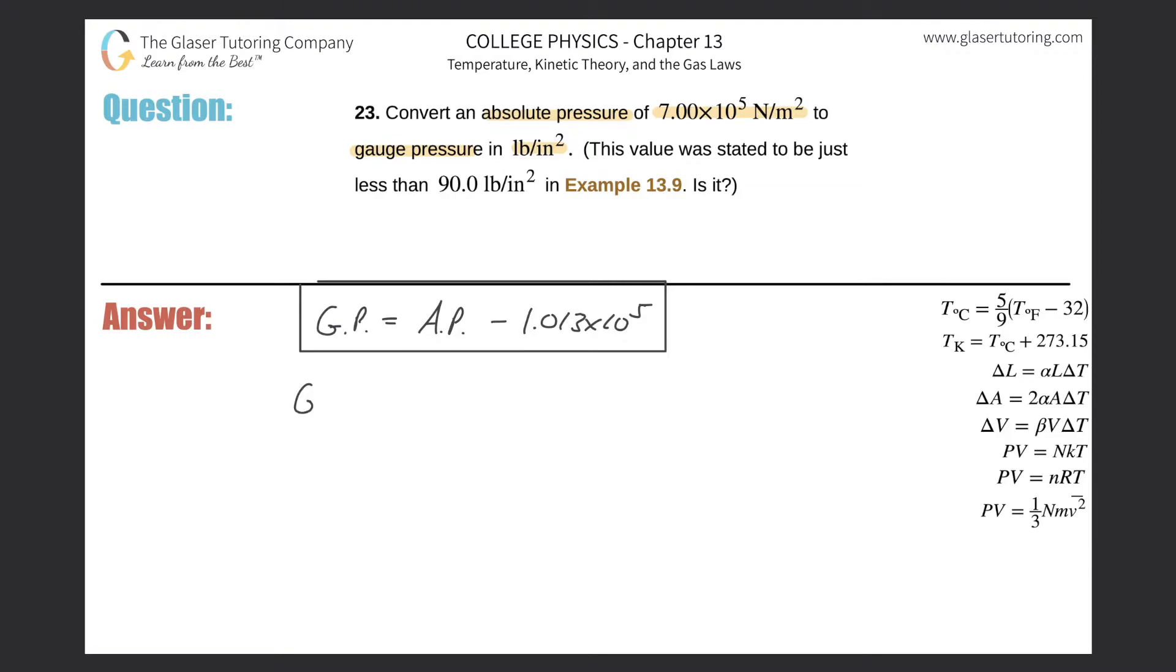So gauge pressure, I'm just going to abbreviate it GP, will equal that absolute pressure of 7.00 times 10 to the 5th minus 1.013 times 10 to the 5th. Take out the handy-dandy calculator if you need it.